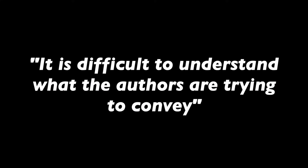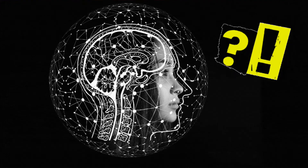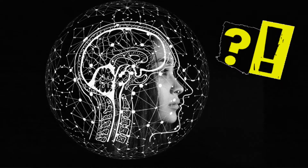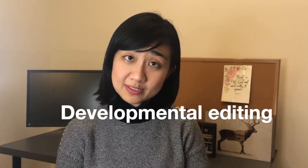Mistake number three: editing only for grammar. You read through your paper and there are no more red or blue squiggly lines, or maybe you paid for proofreading to check your grammar. Then the reviewers respond with: it is difficult to understand what the authors are trying to convey, or the story lacks coherence, or they completely misunderstand the intention of your research paper. This typically occurs because you have not done developmental editing.